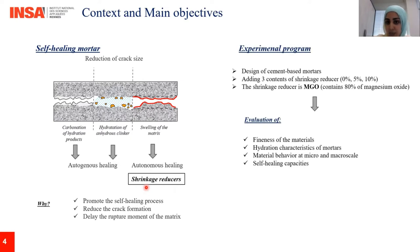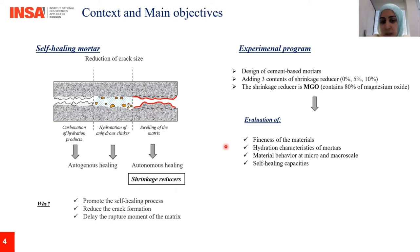According to that, we decided to design cement-based mortars incorporating several contents of shrinkage reducer that contains 80% of magnesium oxide. After that, following the characterization of the materials, the hydration characteristics and the material behavior at micro and macro scale will be evaluated, and of course their self-healing capacities.